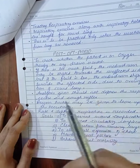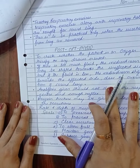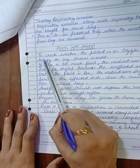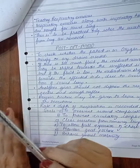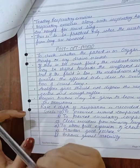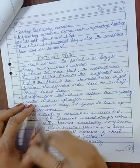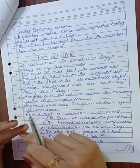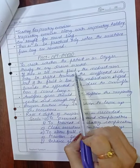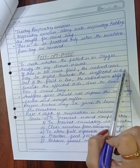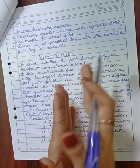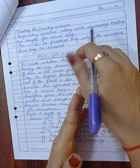Inspiratory exercises are taught, focusing on removing secretions. In post-operative physiotherapy, you first check whether the patient is on oxygen therapy, whether drains are in situ, review all patient notes, history, incision site, BP, and medications. If there is too much fluid, the mediastinum may shift towards the unaffected side; if fluid is less, the mediastinum shifts towards the affected side due to over-inflation of the sound lung.